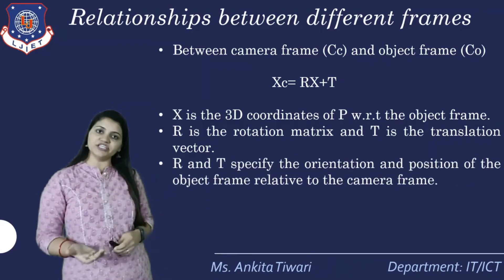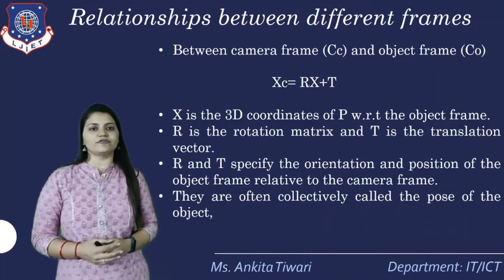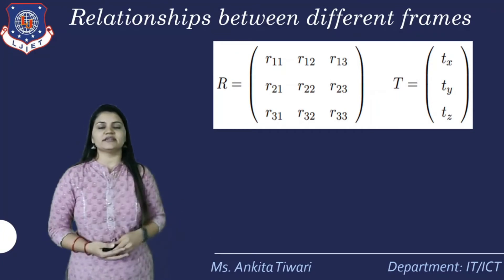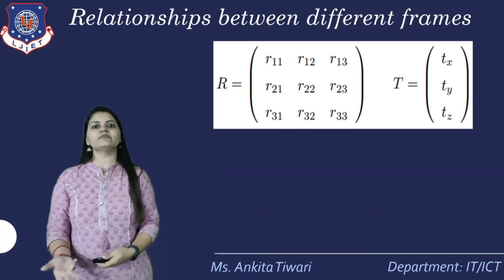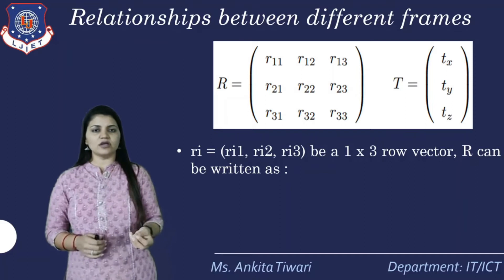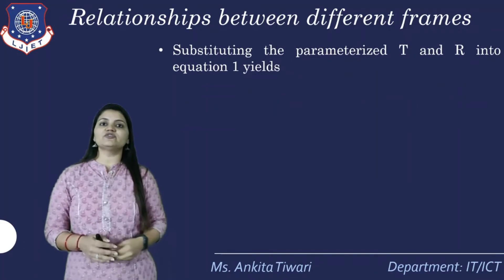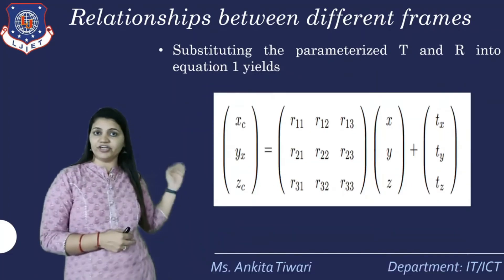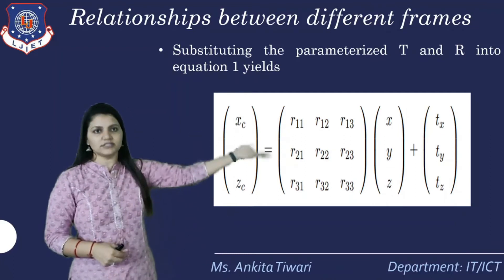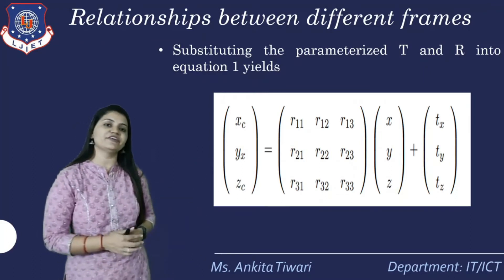R and T specify orientation — first rotation, then translation — and the position of the object frame relative to the camera frame. They are collectively called the pose of the object. R can be parameterized as a 3×3 rotation matrix with row vectors R1, R2, R3 (each 1×3), and T as a translation vector. Substituting these into equation 1 (Xc, Yc, Zc = R·X + T), we get the matrix form with the rotation matrix and translation components Tx, Ty, Tz.